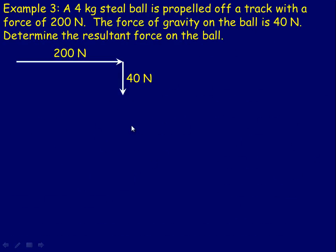Last example, a 4 kilogram steel ball is propelled off a track horizontally with a force of 200 newtons, and the force of gravity on the ball is 40 newtons, which of course is straight down. We're asked to determine the resultant force on the ball. So the resultant force is the sum of this force and the 40. So the resulting force is that vector right there. And in order to find the size of that vector, again this is a right-angled triangle, so we can use Pythagoras' theorem, and we'll need this angle to specify a direction for this resultant force.